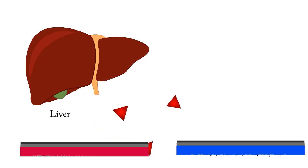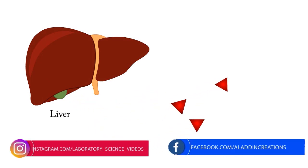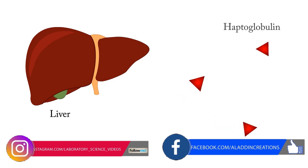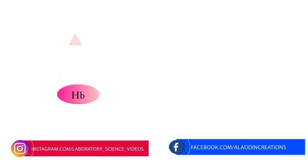Haptoglobin is a plasma protein, mainly produced by the liver, that the body uses to clear free hemoglobin from circulation.